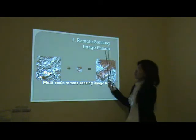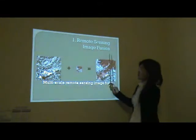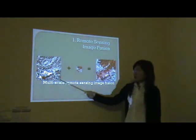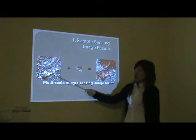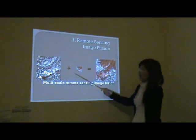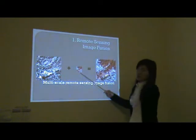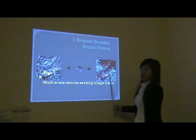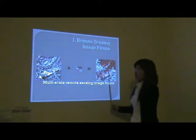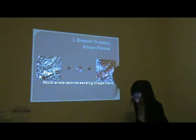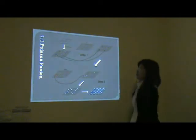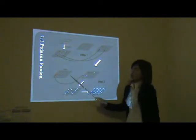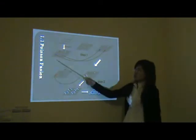First, remote sensing pansharpening. It aims to fuse a high spatial resolution panchromatic image and a low resolution multispectral image to get a high resolution multispectral image. I propose two methods.